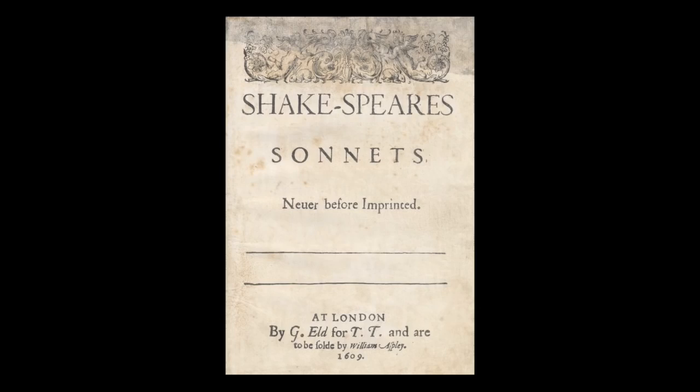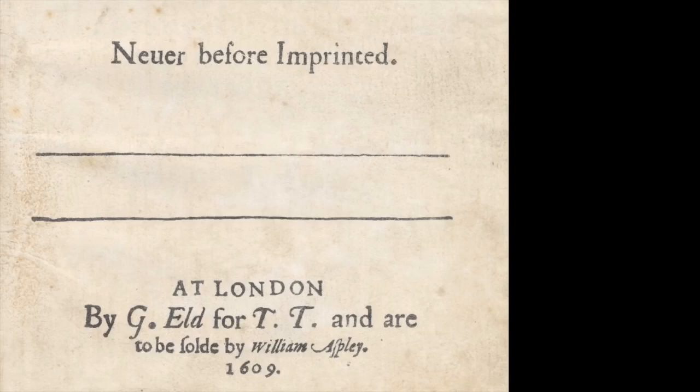This is the original title page of Shakespeare's sonnets, as first published in 1609. It looks fairly normal for the period, except for the two horizontal lines that usually add critical information between them.